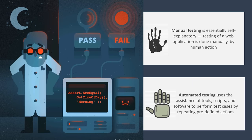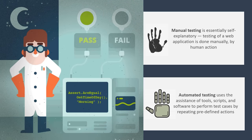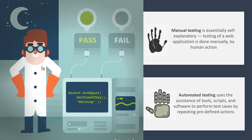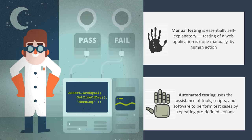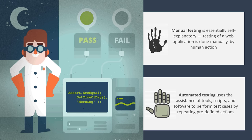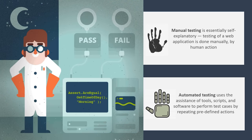Automation testing uses different kinds of tools, scripts, and software to perform test cases by repeating predefined actions. By automating your software testing activities, you will get a comparative edge in the market. For example, Amazon is testing delivery drones that pick up warehouse orders sorted by robots. Google is testing self-driving cars. Starbucks is testing cashier-free stores dedicated to mobile ordering and payment. Facebook is testing a brain-computer interface that may one day translate thoughts into digital text.